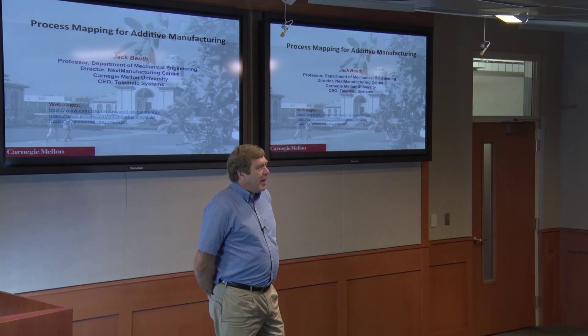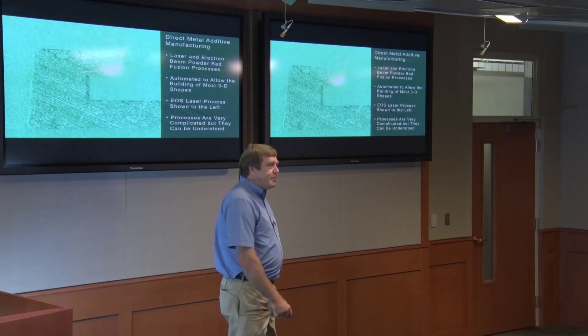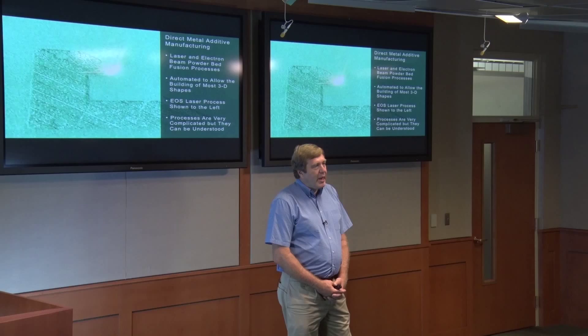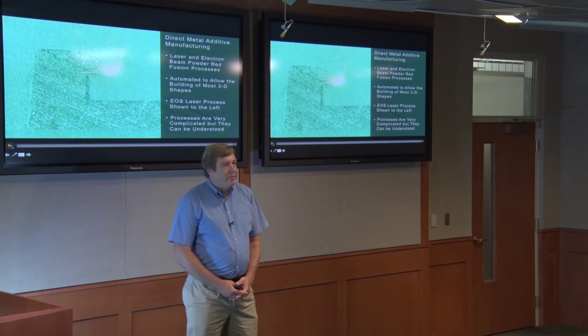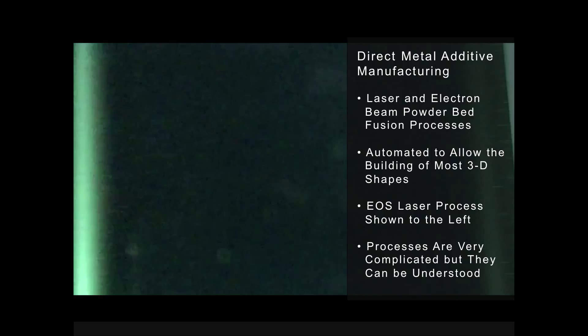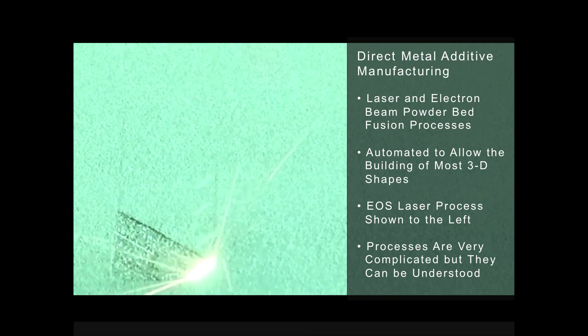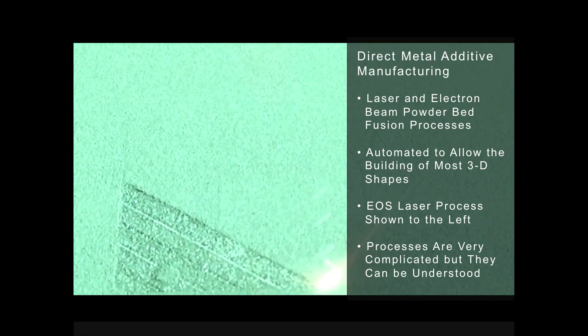I wanted to talk about additive manufacturing today, particularly the metal type processes, the direct metal processes. There are really two types of processes of most interest to industry: the laser and electron beam powder fusion processes, where an electron beam or laser beam moves over a powder bed and locally fuses that powder. This video was taken in our laboratory — we spread powder over the top of a part, and you'll see a laser tracing out the shape of a single layer as it moves across, actually melting the metal powder completely and fusing it to the layers below.